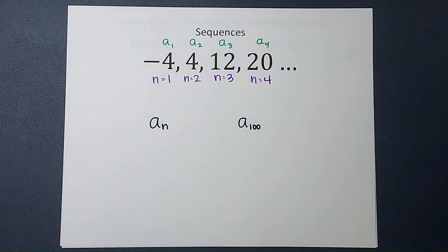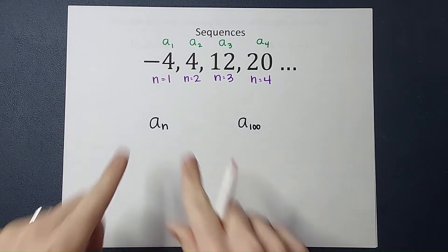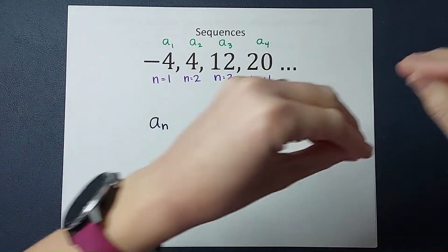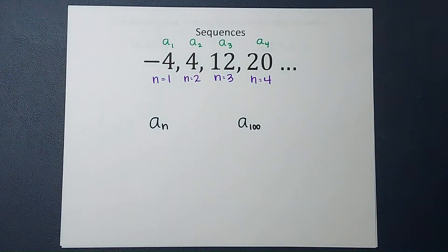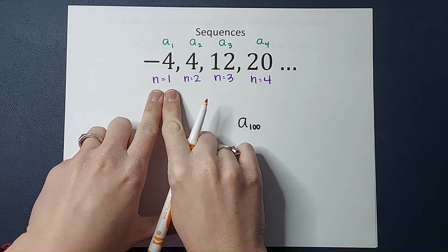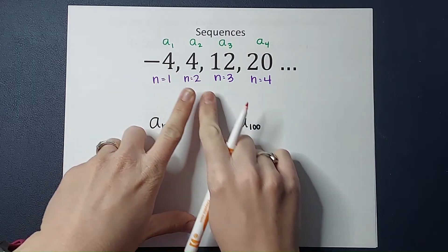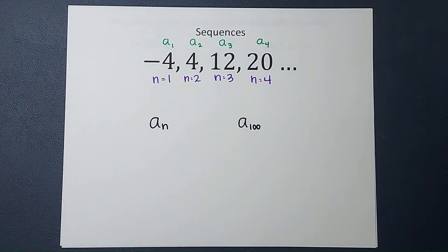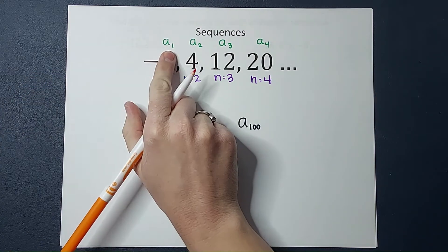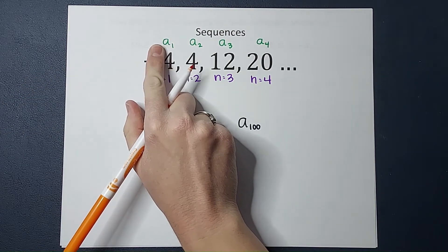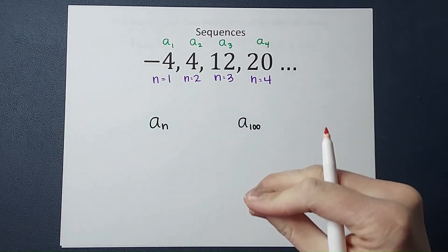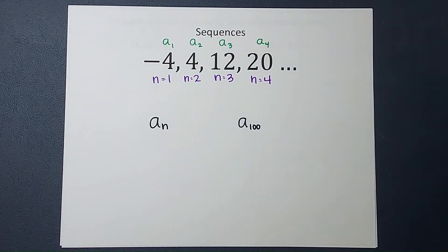So we need to go over just a little bit of terminology and then it falls together pretty quickly. When you're working with these, you're going to see a lot of a's and a lot of n's. The n refers to the place it is in line, the place in the sequence. So n equals one is the first number in the sequence. When you see a with a little subscript, a sub one, that's talking about the value of that number. So a sub one in this case is negative four.